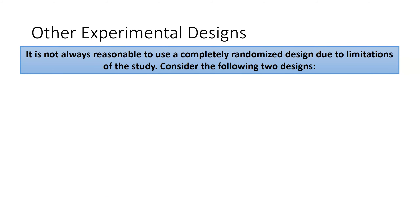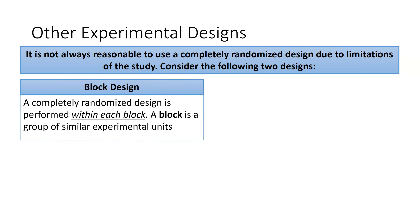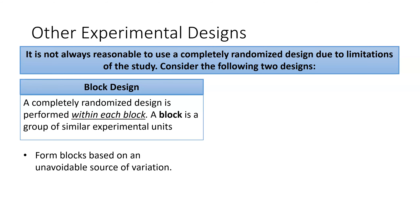Sometimes the simplest experiment is the best. Occasionally we can't rely on a completely randomized design because of limitations we have to work around. One alternative is a block design, where a completely randomized design is performed within each block. A block is a group of similar experimental units, and blocks are formed based on some unavoidable source of variation — something I need to control for but can't eliminate.